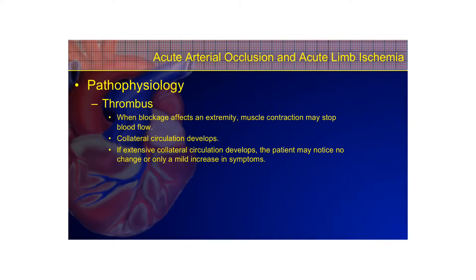When the blockage affects an extremity, blood flow to the muscle is limited during exercise. Muscle contraction may stop blood flow, and the process occurs gradually, allowing collateral circulation to develop and still provide some blood flow to that area. If extensive collateral circulation develops, the patient may notice no change or only a mild increase in symptoms — it's like a backup system of blood flow.